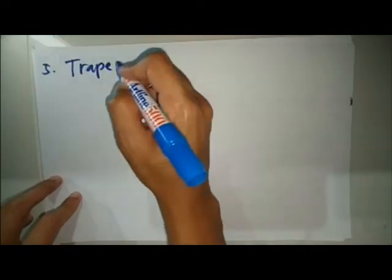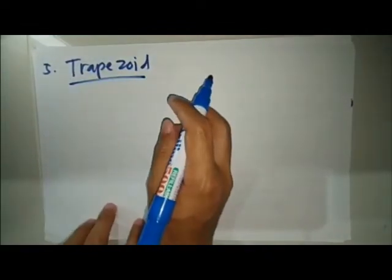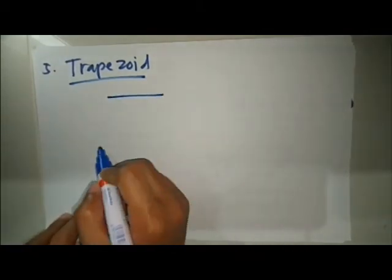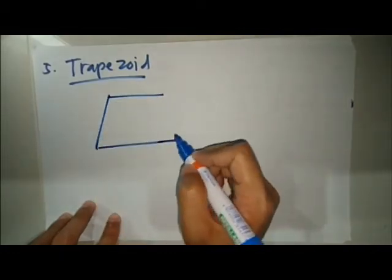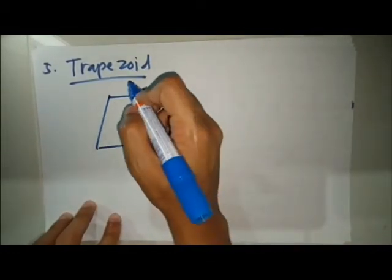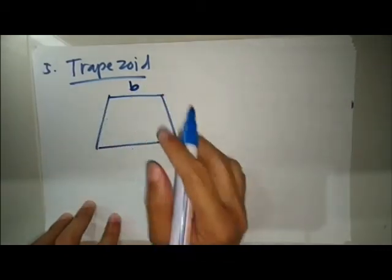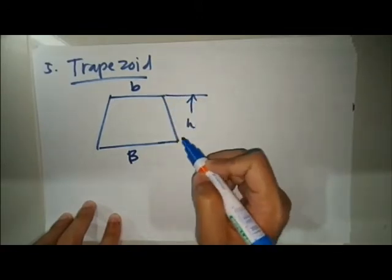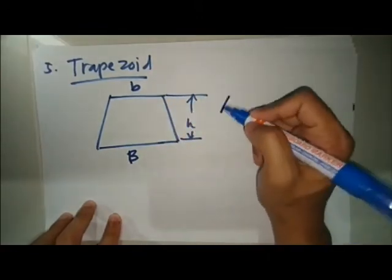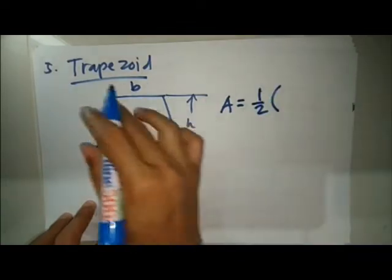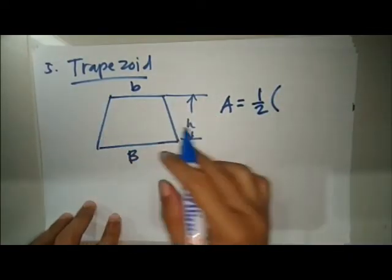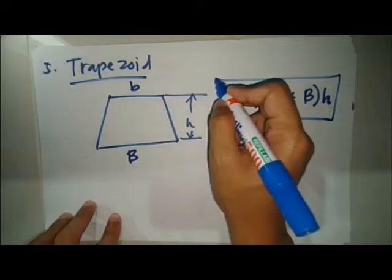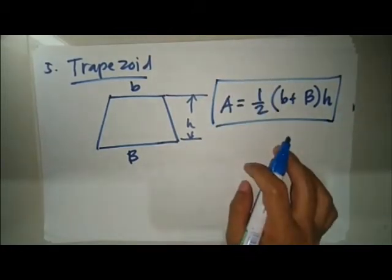Next we have the trapezoid. A trapezoid has one pair of parallel sides. You have the shorter base on top, the longer base on the bottom, and the height. The formula for the area of a trapezoid is one half times the sum of the upper base and lower base, multiplied by the height.